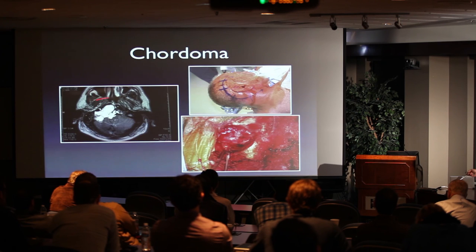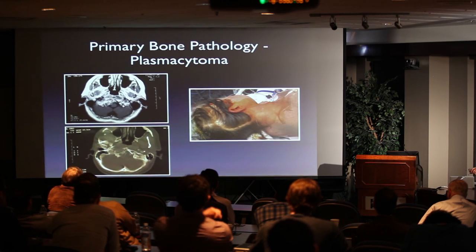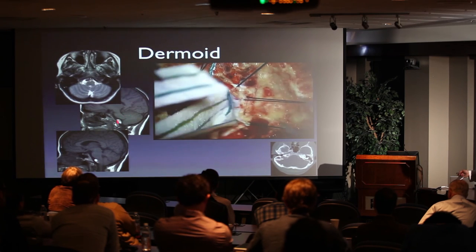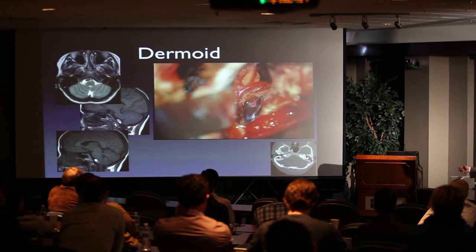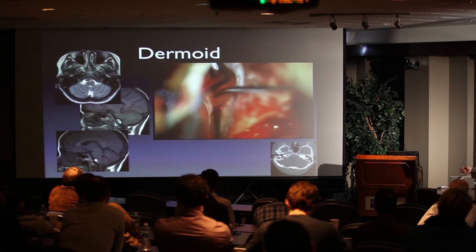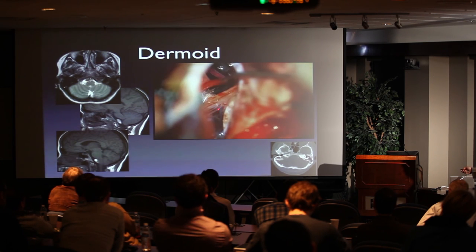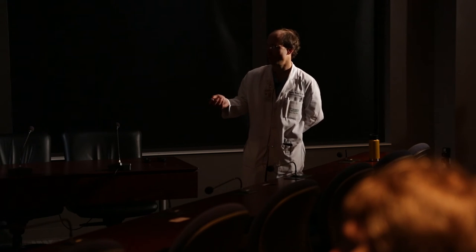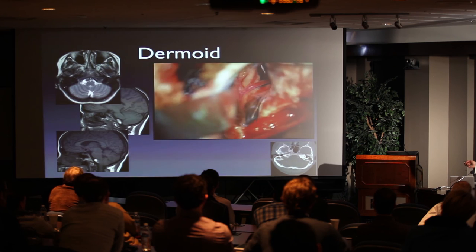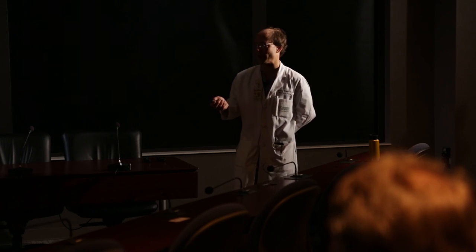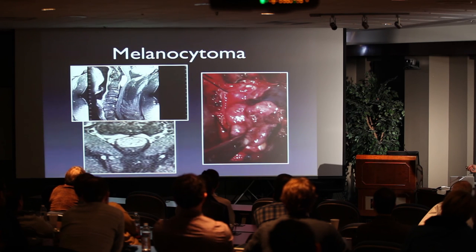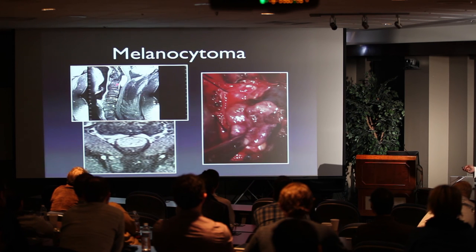Chordomas — everybody agrees you need everything in the kitchen sink as far as approaches. This was approached through a far lateral; the primary bone pathology here ended up being a plasmacytoma, but far lateral gave a nice approach. This is the supracondylar variation for a dermoid. Getting the far lateral exposure, you can see very little retraction. The ninth and tenth nerve complex, the eleventh nerve coming up from below, and here's the dermoid. FYI on dermoids: do not let the material touch anything — it's extremely caustic. Even hitting the dermoid cyst caused nerve monitoring to go off for about 10 minutes, requiring 20 minutes of irrigation. Be very wary of dermoid cysts.